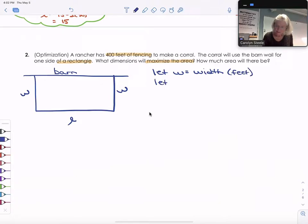And length is going to be l. And that's also in feet. Just like before, we're going to try to write two equations. We can talk about the perimeter and we can talk about the area. So let's start with the perimeter.